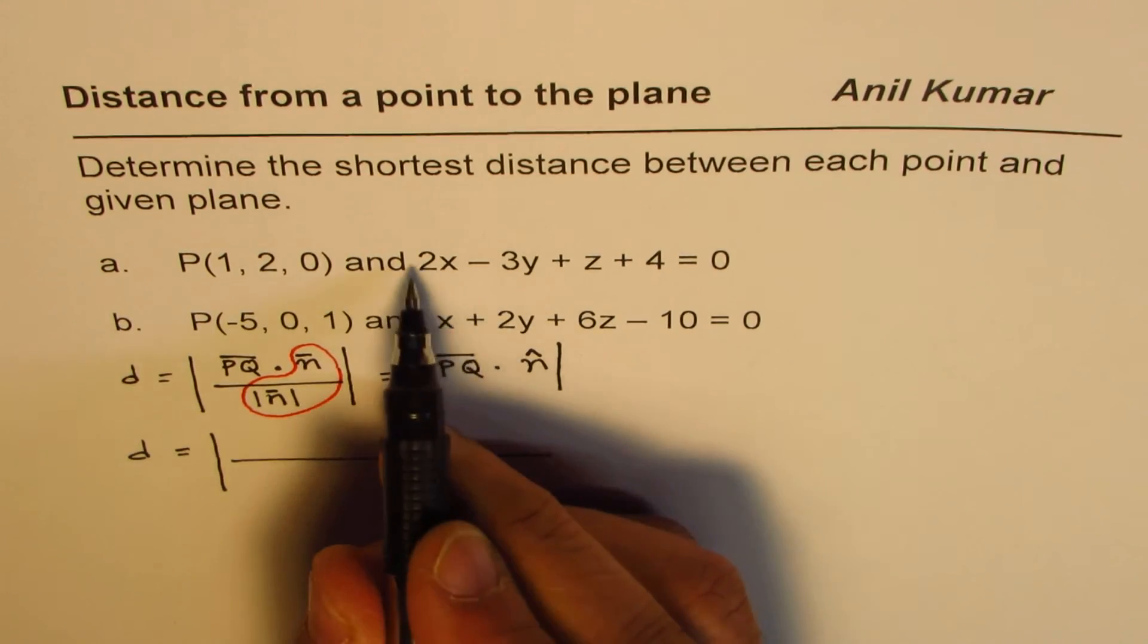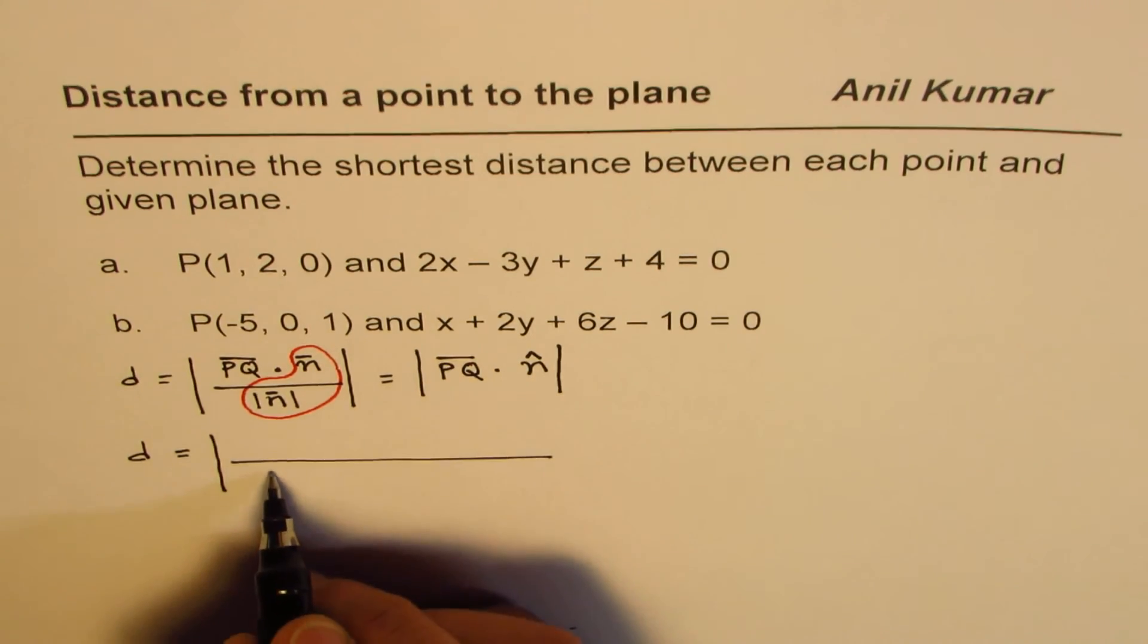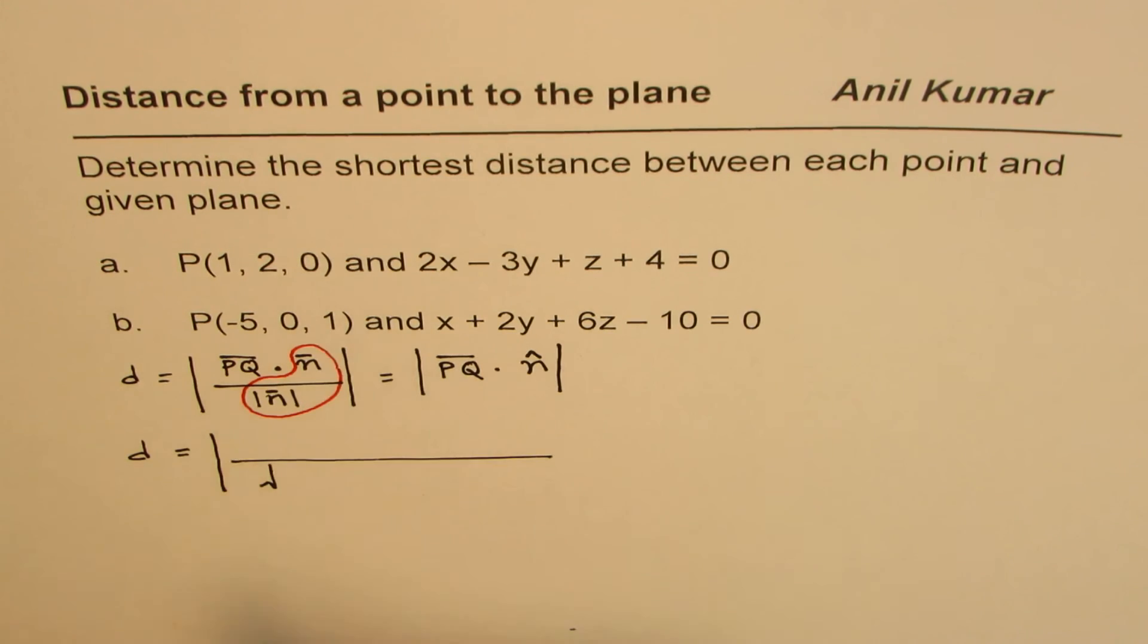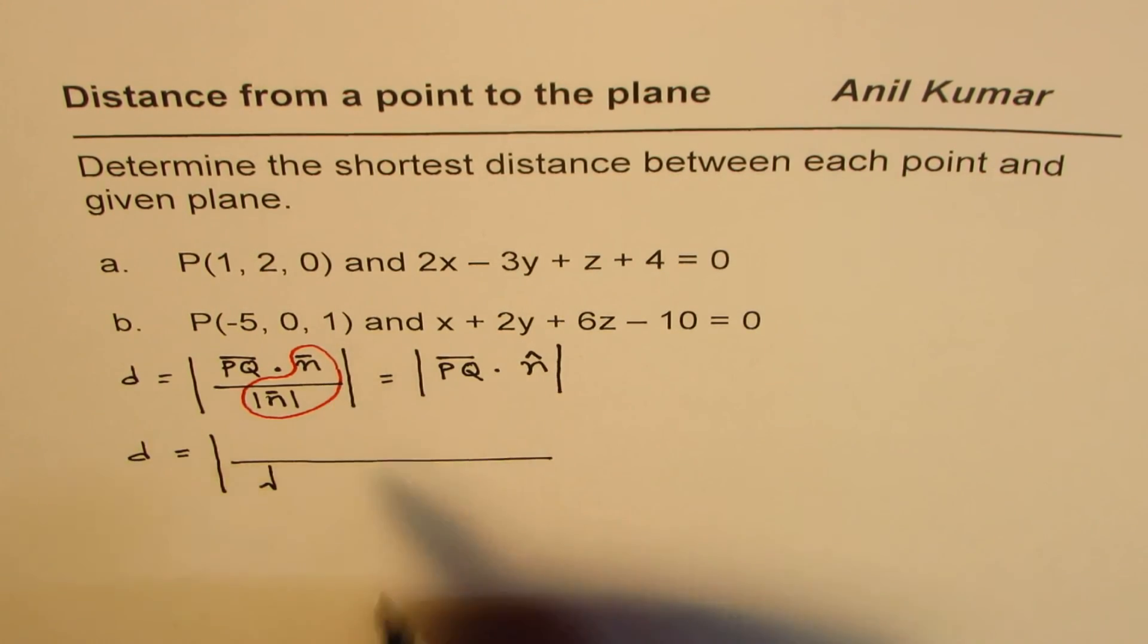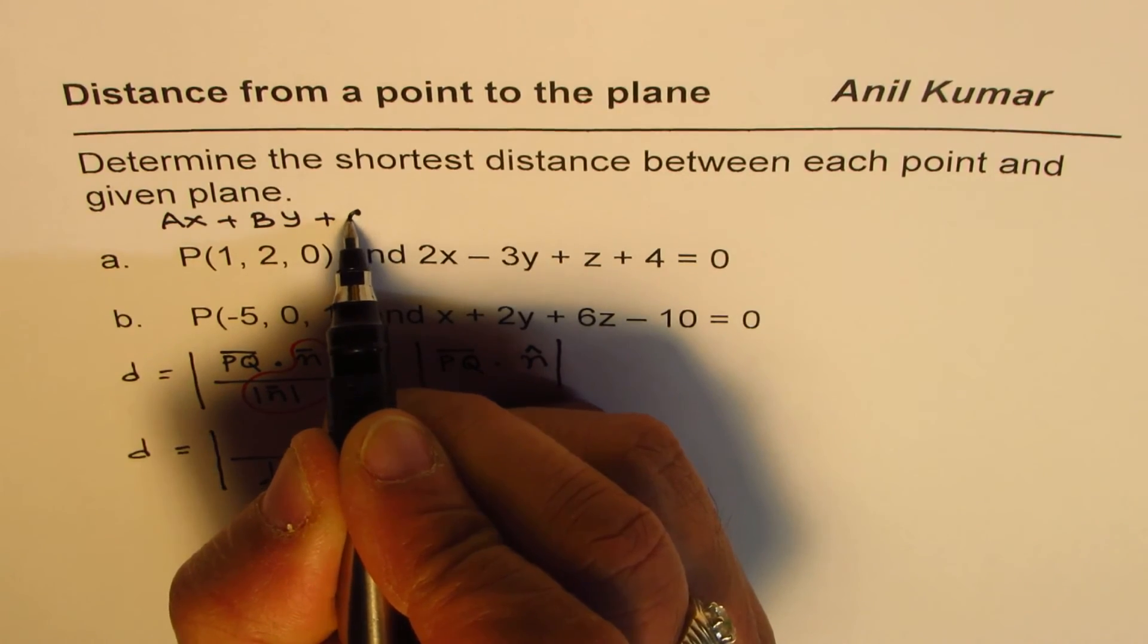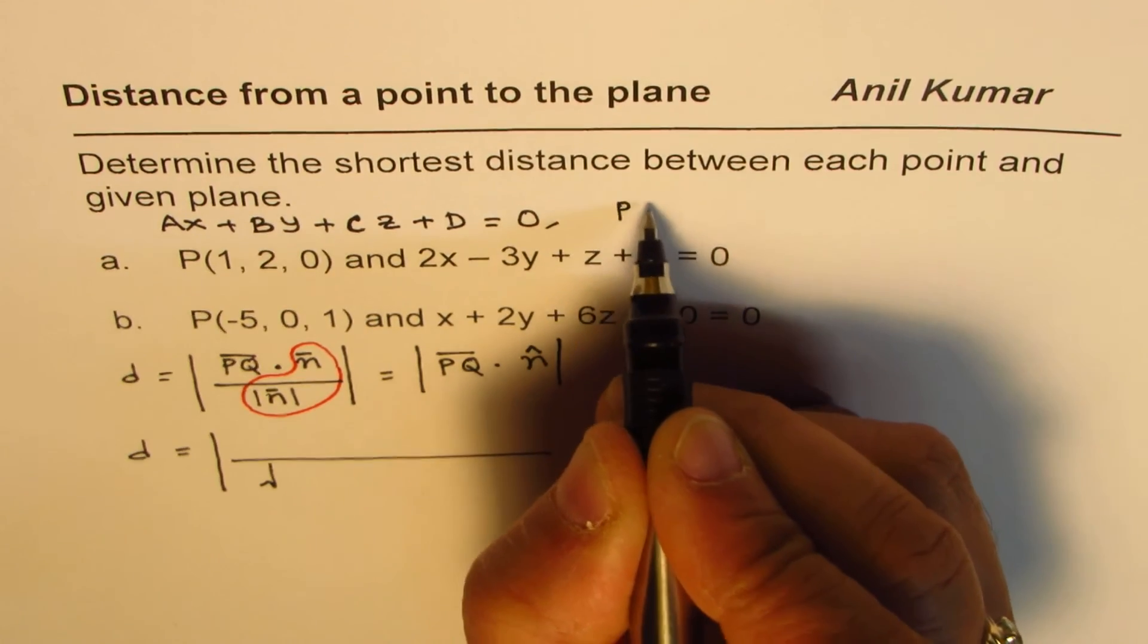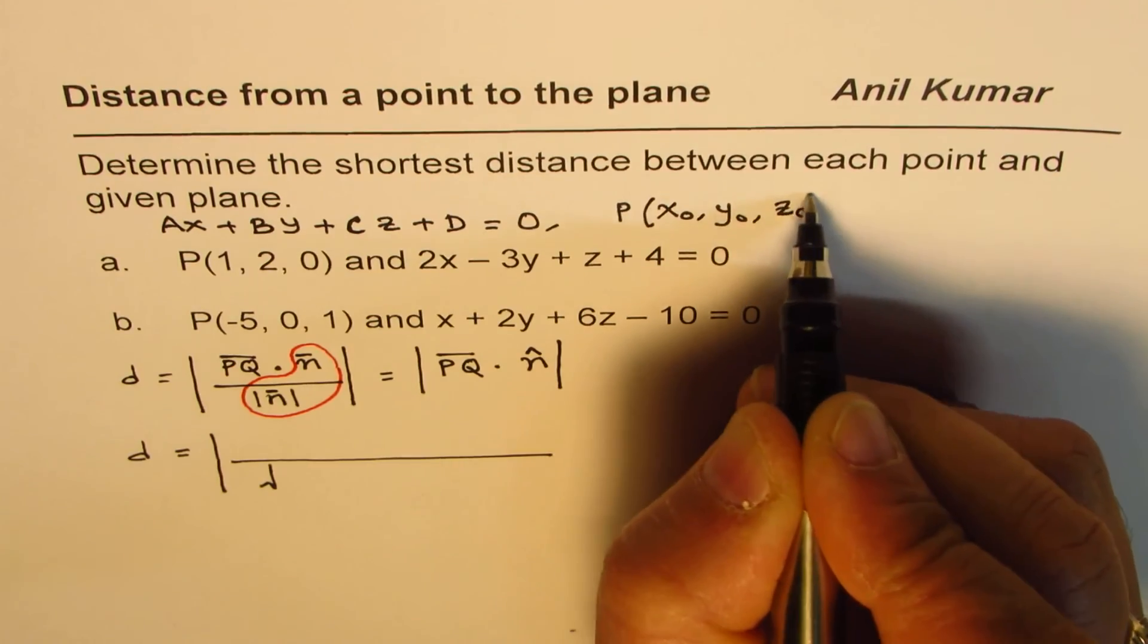You will always find the unit vector as a denominator. So this formula, let me write down general equation of the plane, which is ax plus by plus cz plus d equals to 0. And let me write point P as x0, y0, z0.